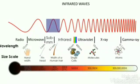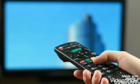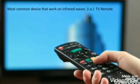The next type is infrared waves. The most commonly used application of infrared waves is the television remote control. Infrared waves form the backbone of operating a television with the help of a remote control.